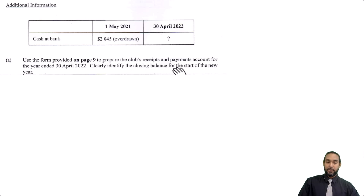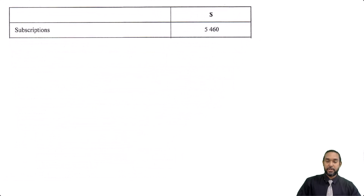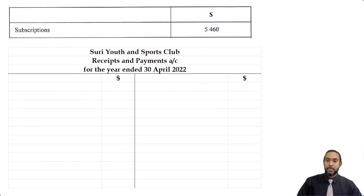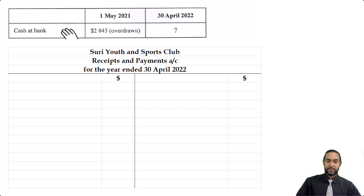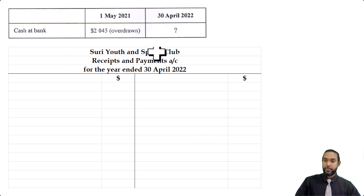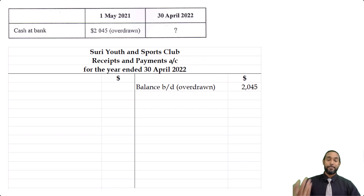The question asks us to use the form provided to prepare the club's receipts and payments account for the year ended 30 April 2022, and clearly identify the closing balance for the start of the new year. It's a nice T-account-style form worth 8 marks. We're going to put in first the opening balance, which is 2,045 overdrawn. Please head it up: Surrey Youth and Sports Club, Receipts and Payments Account for the year ended 30th April 2022. The overdrawn balance is a liability, so it's brought on the credit side — balance brought down, overdrawn, 2,045.